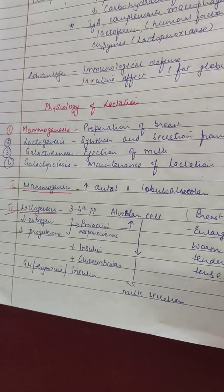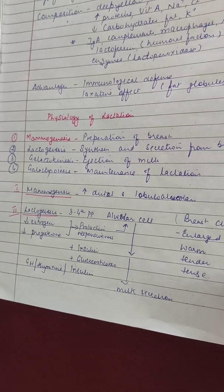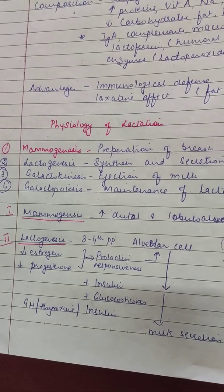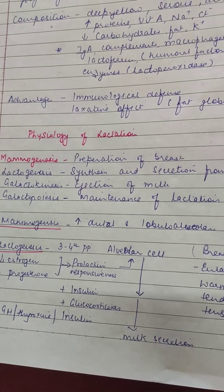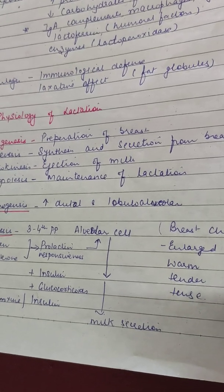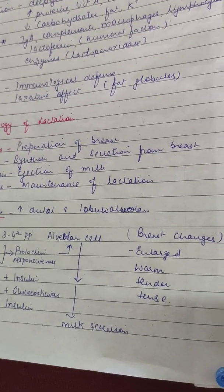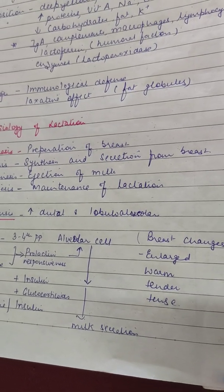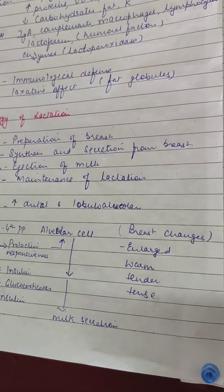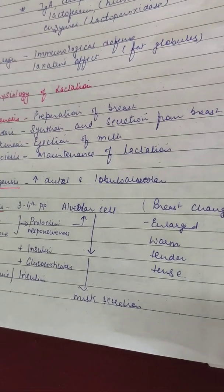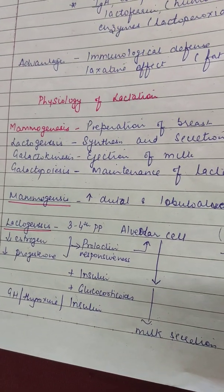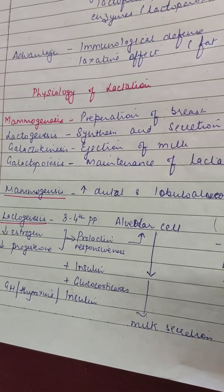Now talking about the physiology of lactation, it is divided into 4 parts: first is mammogenesis, second lactogenesis, third galactokinesis, and fourth galactopoiesis. Mammogenesis is the stage of preparation of the breast. It starts from pregnancy itself — there is an increase in the ductal, lobulo-alveolar structure of the breast, meaning anatomical and physiological changes in the ducts, lobules and alveoli, preparing the breast for milk production.